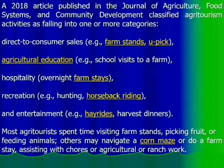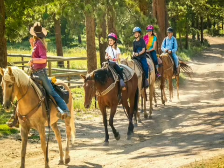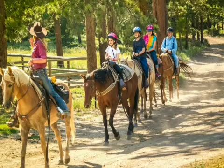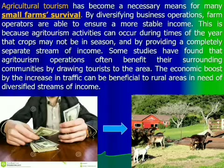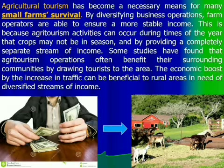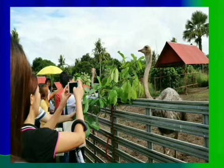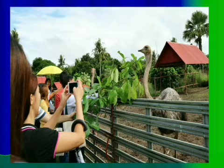Hospitality, recreation, and entertainment all require rural and agricultural tourism. On the screen you can see tourists riding horses — that is a form of recreation. Groups of tourists can ride different kinds of animals that don't exist in their home countries. Agricultural tourism has also become a necessary means for many small farmers' survival, and people create their own orchards and animal farms to attract guests.